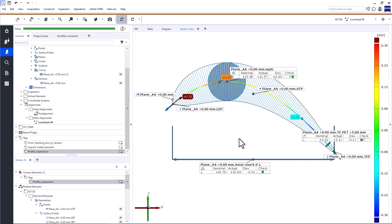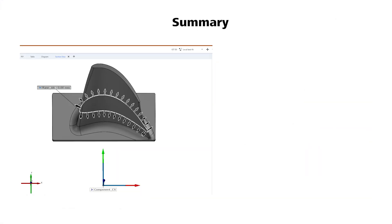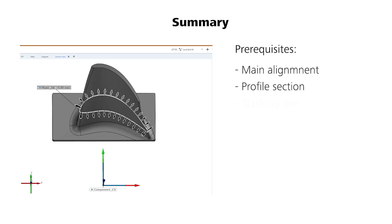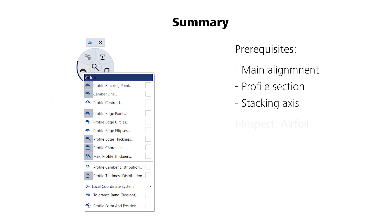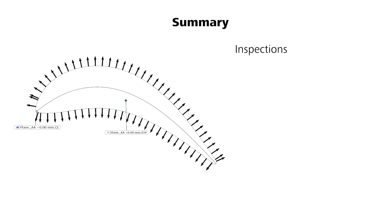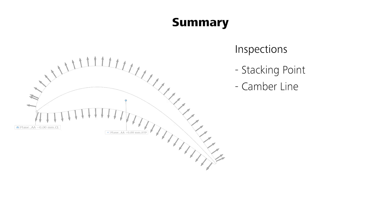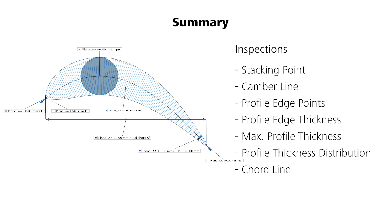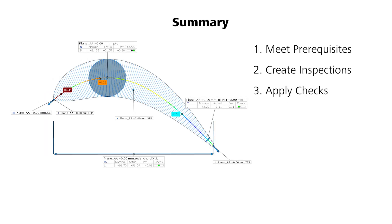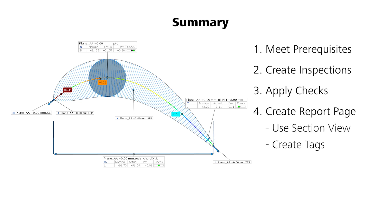Great! Now, I know this was a lot, so let's briefly summarize. You learned that you need a main alignment, a profile section, and, if required, a stacking axis to perform airfoil profile inspections. You got to know the airfoil profile inspection menu in iInspect, which is step 4 of the workflow support. We created basic inspection elements — the profile stacking point and camber line — and we constructed some camber line-dependent inspections. You learned that you need to apply checks to inspection elements to display the results. You also learned how to create a report page, how to use the section view, and how to create tags to stay organized.